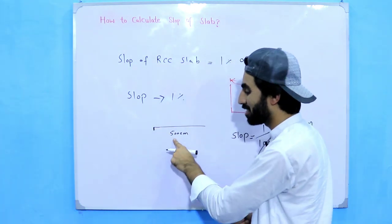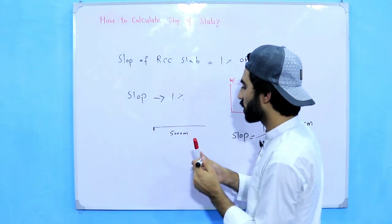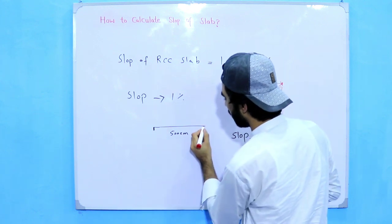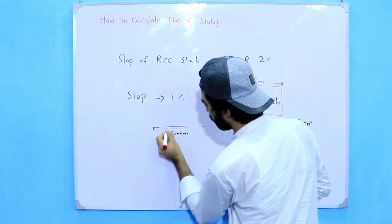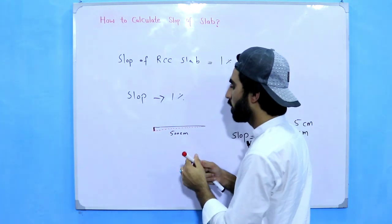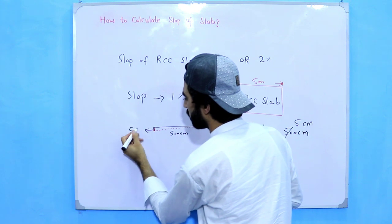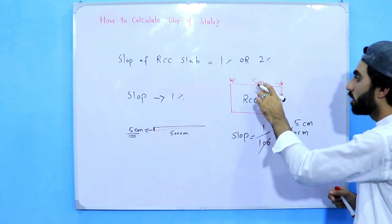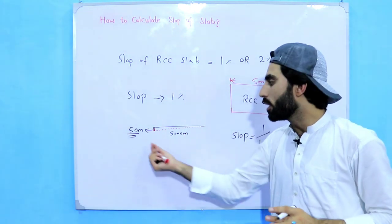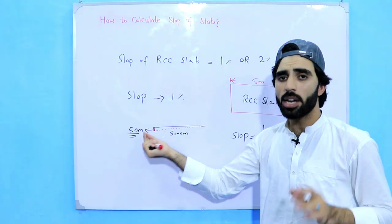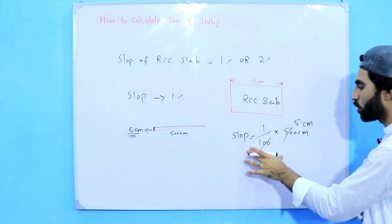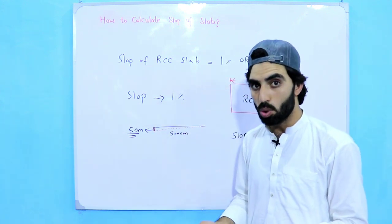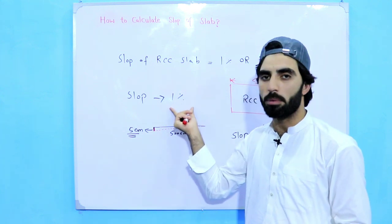This is just an example — the diagram is not to scale. As you can see, this is the slope of the RCC slab, which comes out to 5 centimeters for a 5-meter slab. If the slab is 10 meters long, it should be 10 centimeters of slope. You can always use this formula to find the slope of any RCC slab. Remember, slope should not be more than two percent.